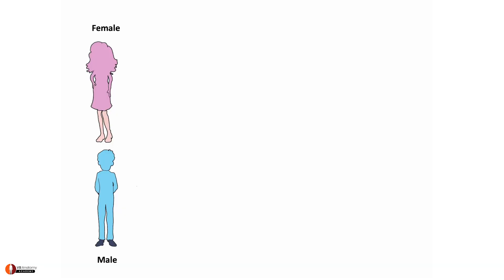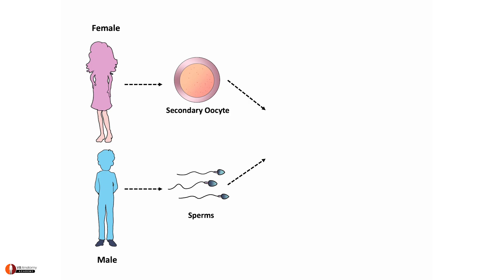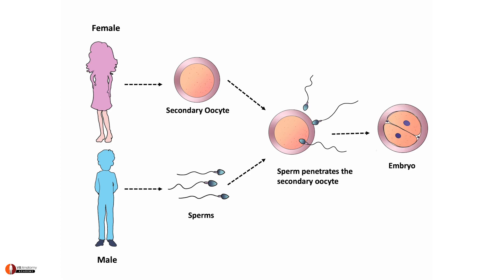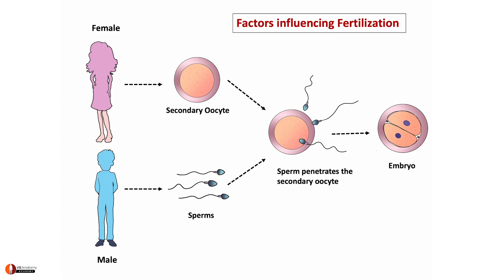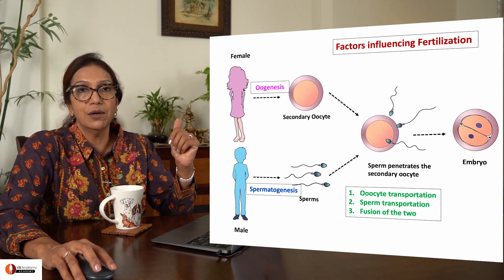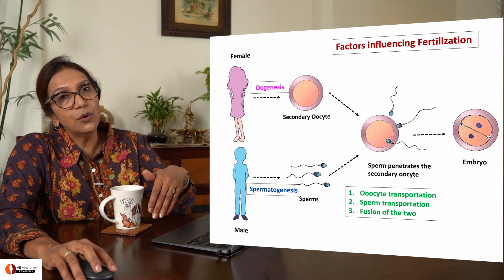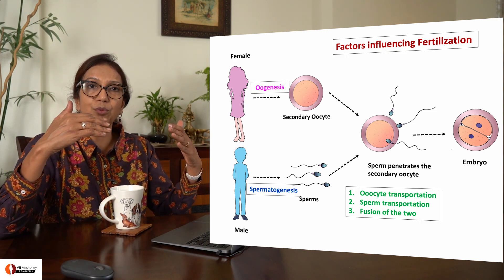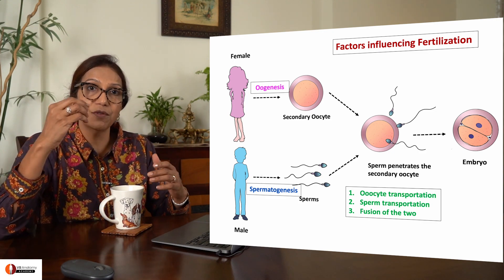Here is a female producing the secondary oocyte, and here is a male producing the sperms. Both the oocyte and the sperm travel to the ampullar fallopian tube where the sperm penetrates the secondary oocyte, and finally there is production of an embryo. This whole process is fertilization, which is influenced by factors such as oogenesis, spermatogenesis, oocyte transport, and sperm transport.